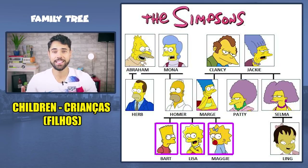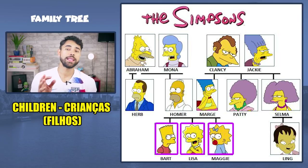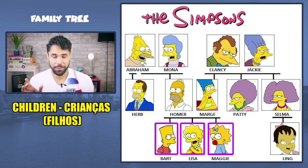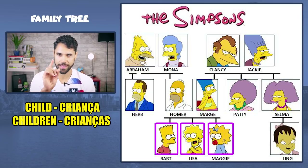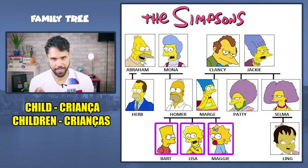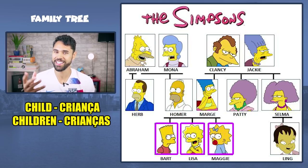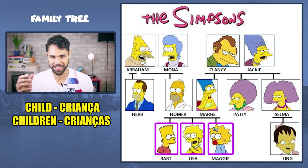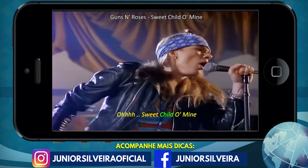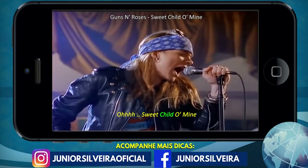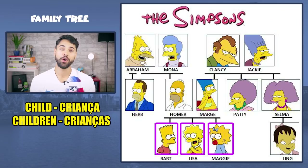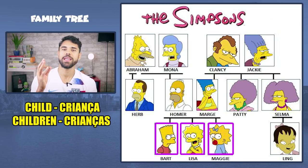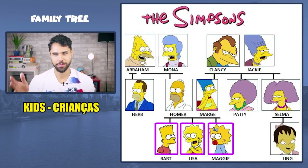Três crianças, três filhos, né? E nada de dizer childs, porque o plural de child é children. Então child é uma criança, um filho. E o plural children. Sweet child of mine — Guns and Roses, né? Minha doce criança. Ou você também pode dizer three kids — três filhos, três crianças.